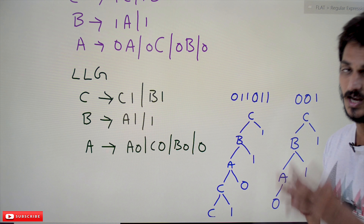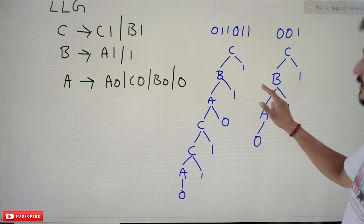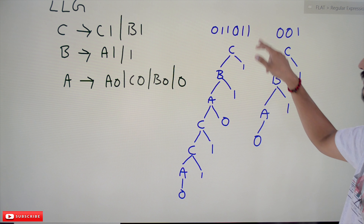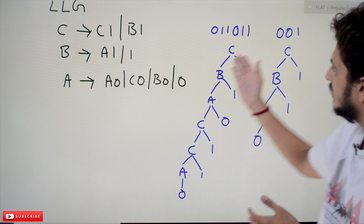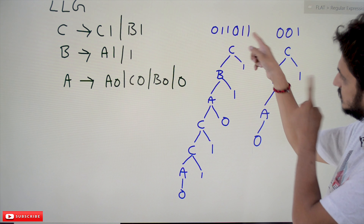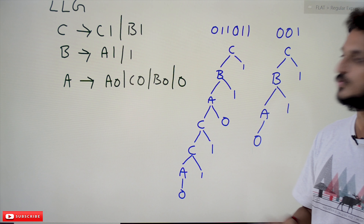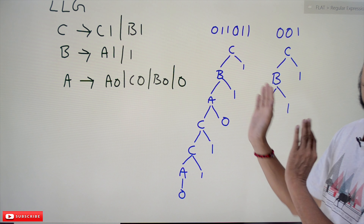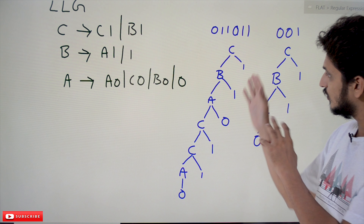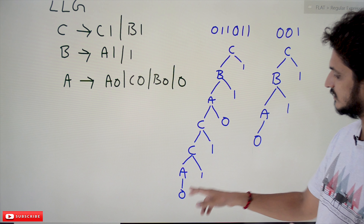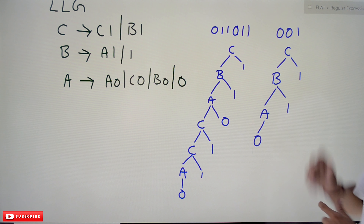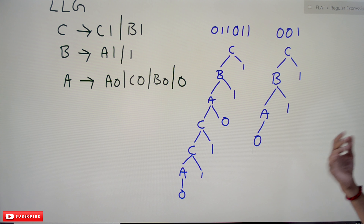Let's check whether this left linear grammar accepts strings ending with last two characters as one one. Take zero one one zero one one — yes, using this left linear grammar we are able to generate the string. The non-terminals are on the left-hand side. We are able to generate zero one one zero one one, so it is accepted. The same way, zero zero one is not accepted — we generated up to zero one one but are not able to generate zero zero one.